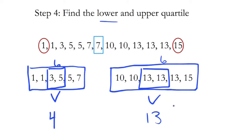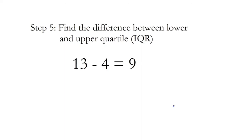In step number five, we finally find the IQR — the interquartile range. We do that by finding the difference between the lower and upper quartiles. We had 13 and four, so we simply subtract them, and we get an IQR of nine.